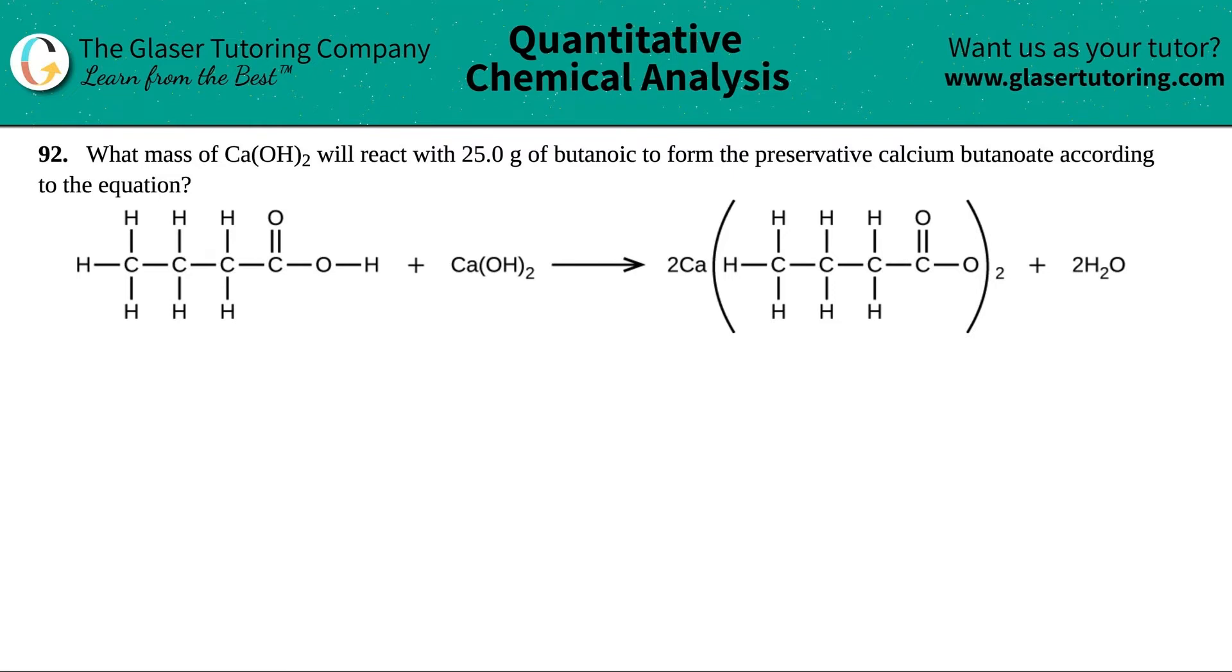Number 92. What mass of Ca(OH)₂, which is calcium hydroxide, will react with 25.0 grams of butanoic to form the preservative calcium butanoate according to the equation?